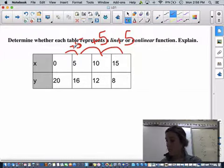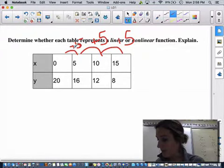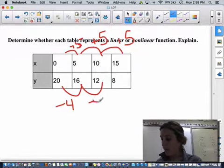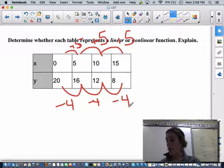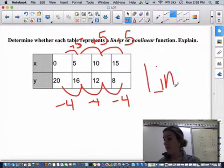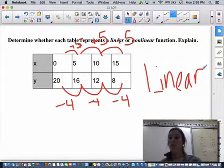So now from 20 to 16 is minus 4. 16 to 12 is minus 4. 12 to 8 is minus 4. So this is a linear function.